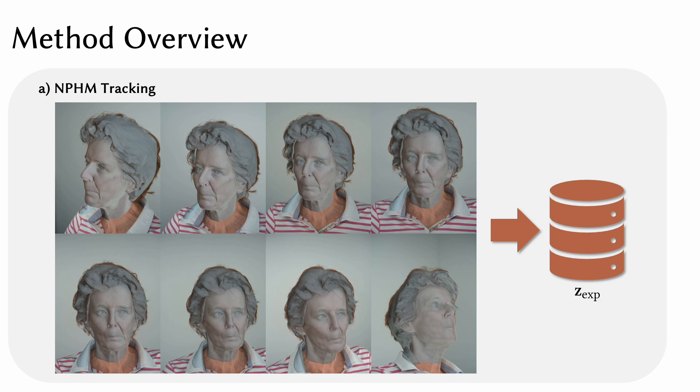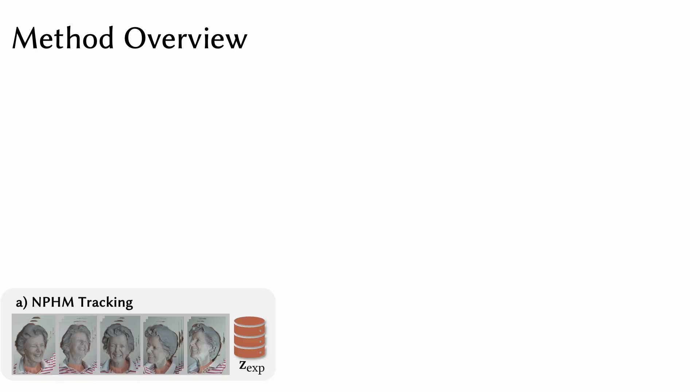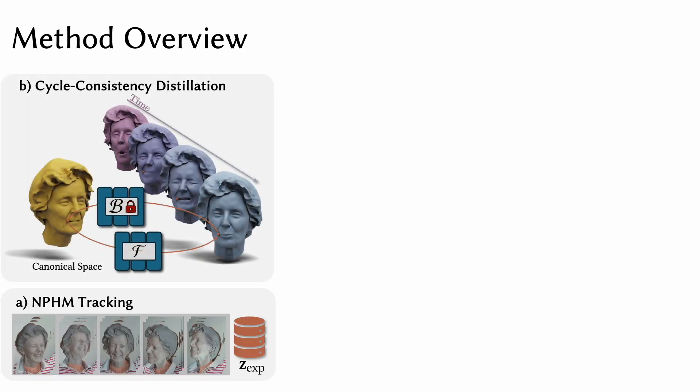However, Mono-NPHM's expressions are modeled using a backward deformation field, warping points from pose-space into canonical space. Since rasterization is a forward rendering approach, we propose a simple cycle consistency objective to obtain a forward deformation field compatible with 3D Gaussian splatting.